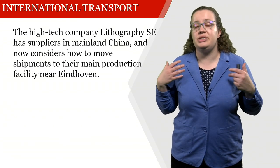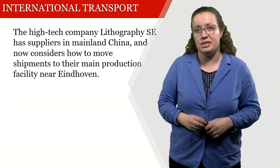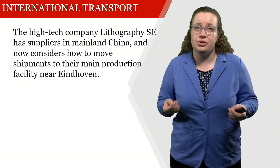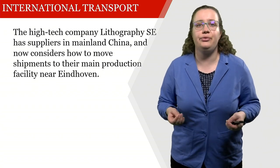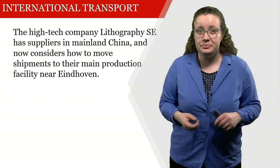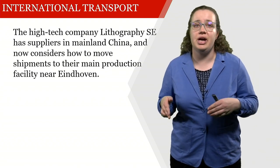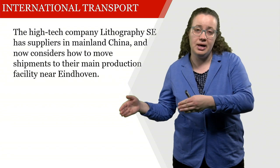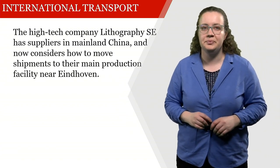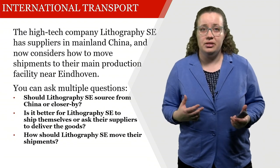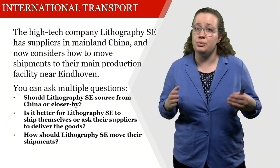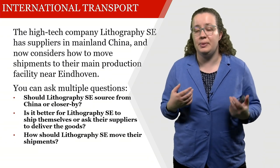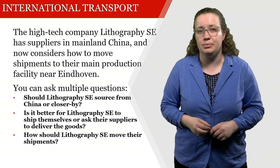We can also look at this using an example that recurs throughout this series of web lectures: the intermodal international transport example of the high-tech company Lithography SE. Lithography SE is located in the vicinity of Eindhoven but has suppliers in mainland China. Consider how to move shipments to their main production facility near Eindhoven — from suppliers in China to the production facility in the Netherlands. They can ask: does it make sense to source from China or from closer by? Is it better to ship themselves or have suppliers deliver? And how should they move those shipments?